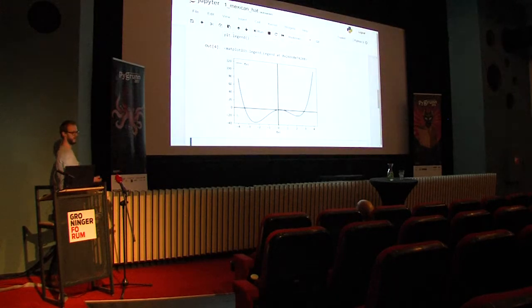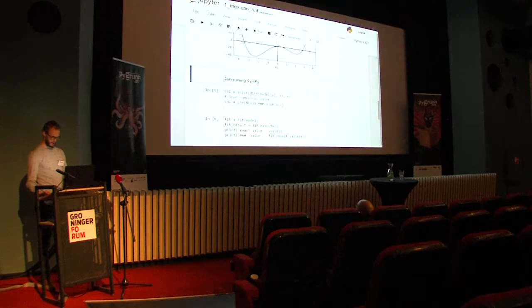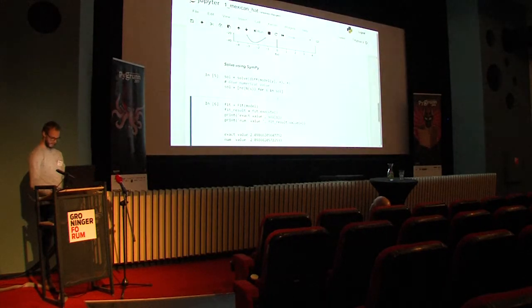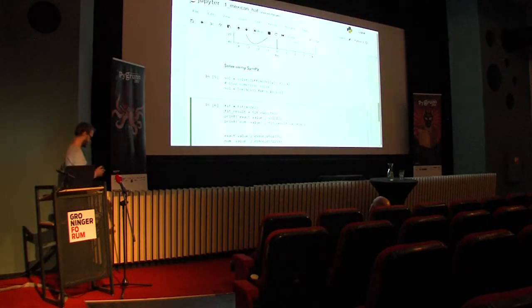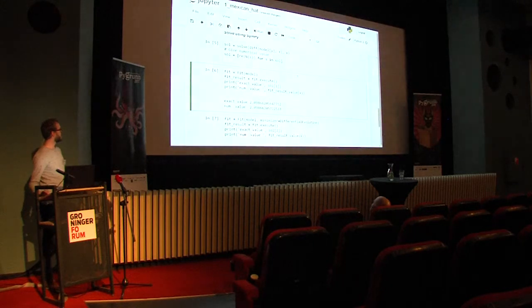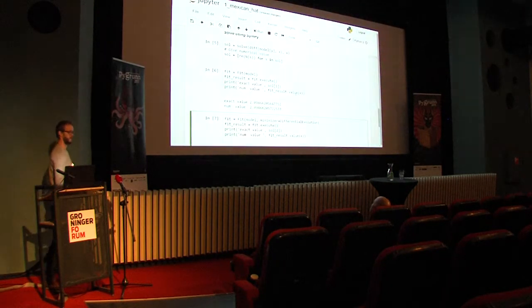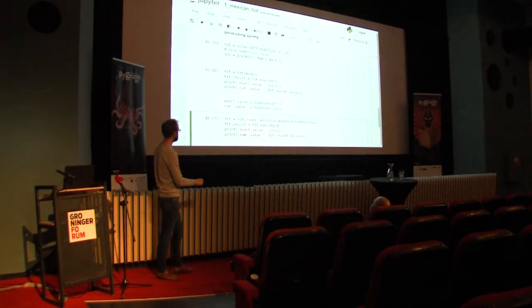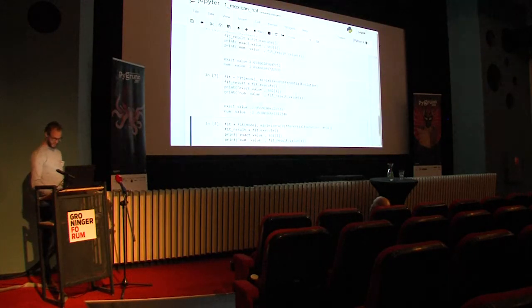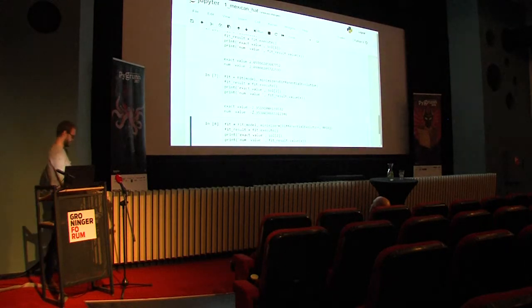What ends up happening is that indeed we end up in this positive local minimum, not the global one. So to find the global minimum, we tell fit to use differential evolution as the minimizer - a global minimization that scans the whole space. That's now as easy as just adding one statement, and we immediately end up in the right potential well.